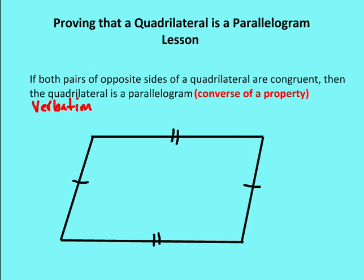Next is: if both pairs of opposite sides of a quadrilateral are congruent, then the quadrilateral is a parallelogram. We say that's a converse of the property.